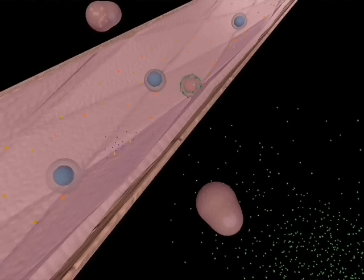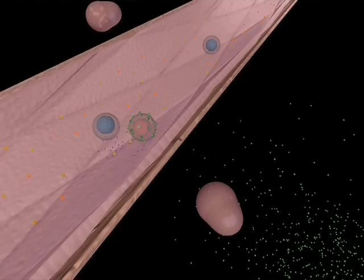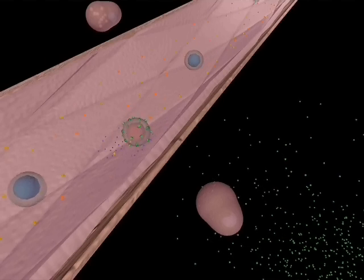These interactions cause the lymphocytes to slow down and roll along the endothelium, enabling them to sample other adhesion molecules which have been induced onto its surface.